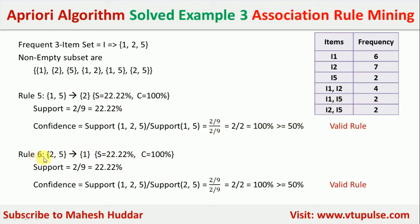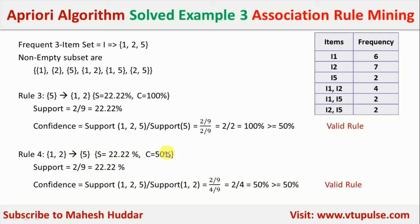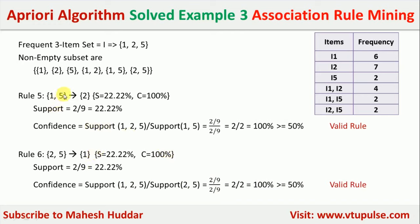Rule 6: {2, 5} → {1}. Support = 22.22%. Confidence = (2/9) / (2/9) = 100%, greater than 50% — valid rule. For itemset {1,2,5}, rules 3, 4, 5, and 6 were valid. This is the complete process for applying the Apriori algorithm to find association rules for the given set of transactions.